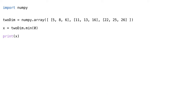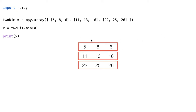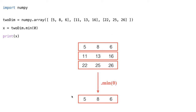So that's the maximum function. We can also look at the minimum function, which does basically the same thing except instead of taking the highest value it takes the lowest value. I'll put the two-dimensional array up on the screen and ask you to pause the video and determine the result of .min(0) and .min(1). With .min(0) we take the minimum value across all the rows: the 5, 11, 22 go together giving a minimum of 5; the 8, 13 and 25 go together giving a minimum of 8; and the 6, 16 and 26 go together giving a minimum of 6. That's the result from .min(0).